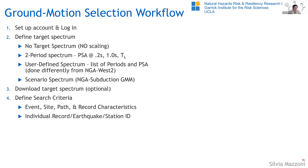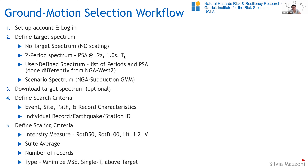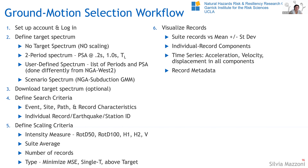Once you've defined your target spectrum, if you want you can download a CSV file that gives you the input as well as the output. The next step is to define your search criteria — going into the NGA subduction flat file. You define event, site, path, and record characteristics, or you can search by earthquake ID or station ID. Then for scaling, you define what kind of scaling you want, on what intensity measures, what suite average you want, the number of records, and the type of scaling.